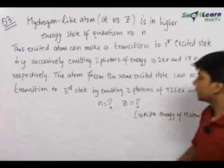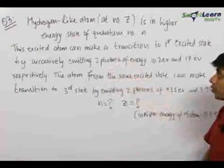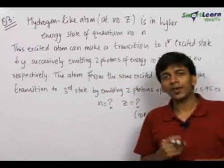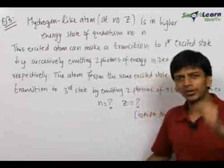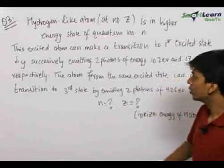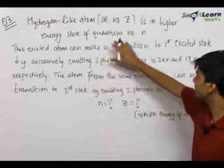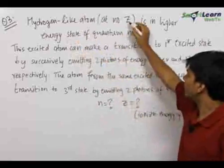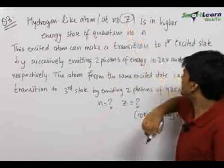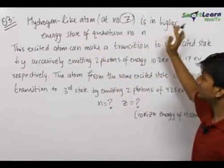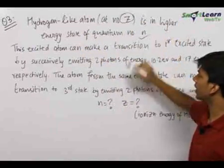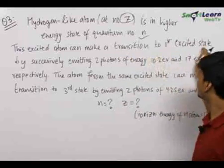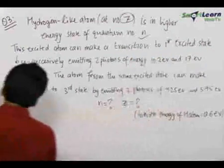This is a pretty interesting problem which can be solved very easily if you have practiced a lot and have a bit of intuition. For solving this question, let us read it first: there is a hydrogen-like atom with atomic number Z which is in a high energy state of quantum number n. This excited atom can make a transition to the first excited state. Let us draw the diagram.